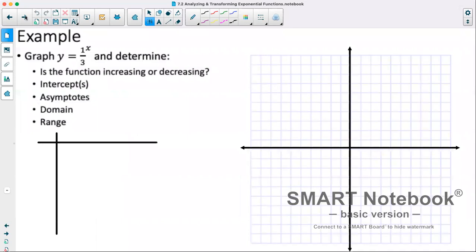So our first example, graph y equals 1 over 3 to the power of x, and determine if the function is increasing or decreasing, any intercepts, asymptotes, domain, and range.